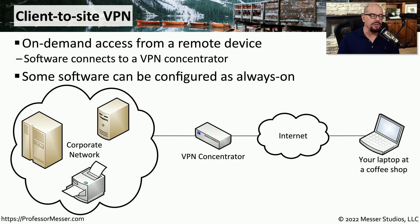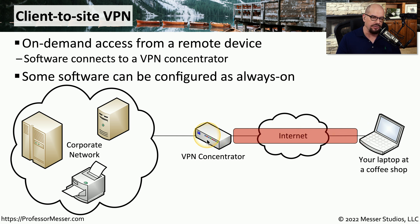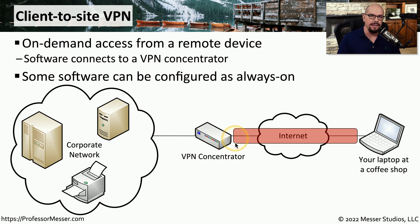This means you can still be secure when using your laptop in a coffee shop, even if the wireless network there is open and not encrypted. You would either use VPN software that's always on and always connected, or you would have the option to enable the VPN capability on your laptop. When you do that, it creates an encrypted tunnel back to the VPN concentrator, and now everything sent from your laptop will be encrypted across the wireless network of the coffee shop, the internet, and any other links until it reaches that VPN concentrator.